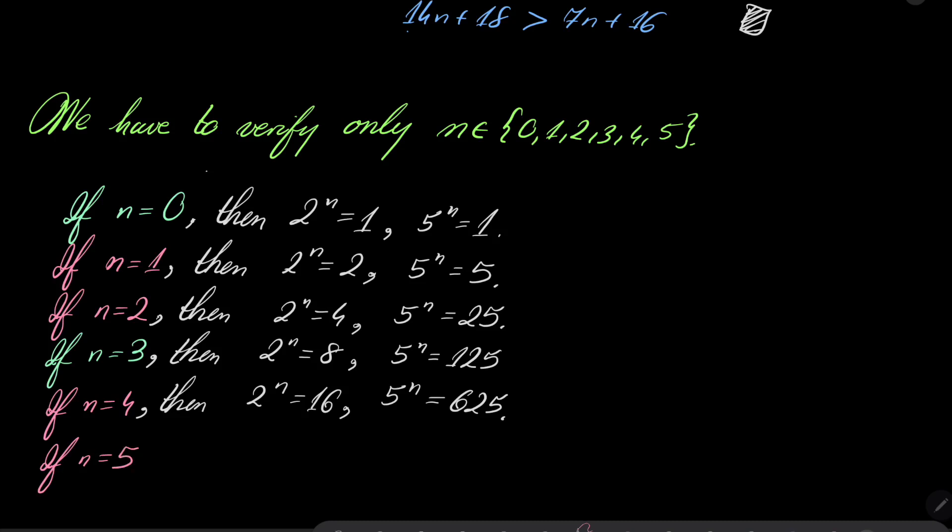And finally, if n equals 5, then 2 to the power of n is 32, 5 to the power of n is 3125, and if we add the digits, 3 plus 1 is 4, plus 2 is 6, 6 plus 5 is 11, 11 is less than 32.